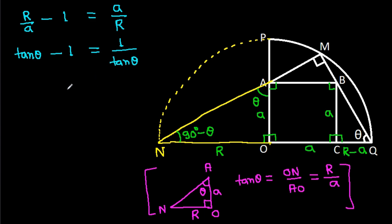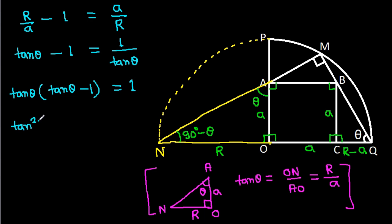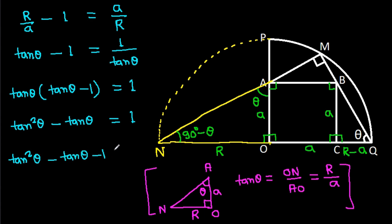If we cross multiply, then tan theta times tan theta minus 1 equals 1. That gives tan squared theta minus tan theta equals 1, and therefore tan squared theta minus tan theta minus 1 equals 0.